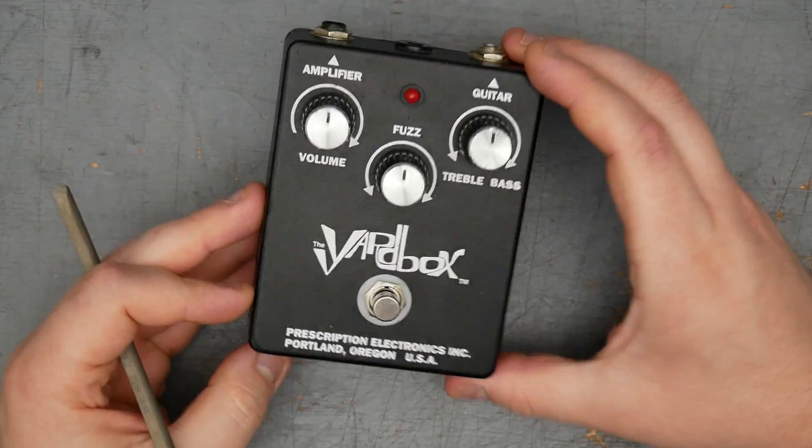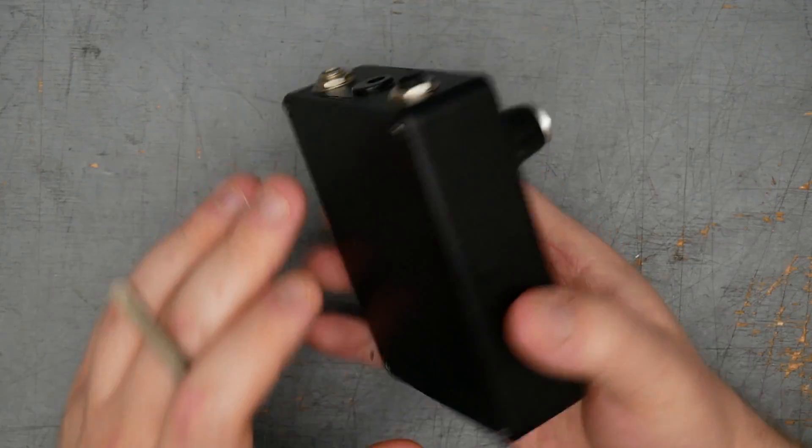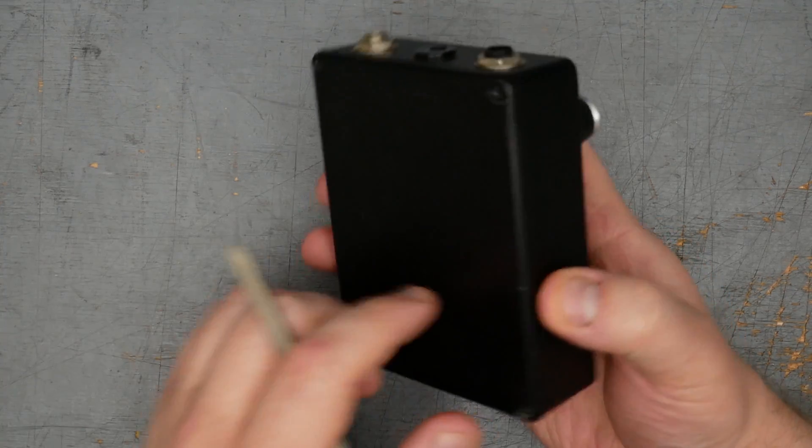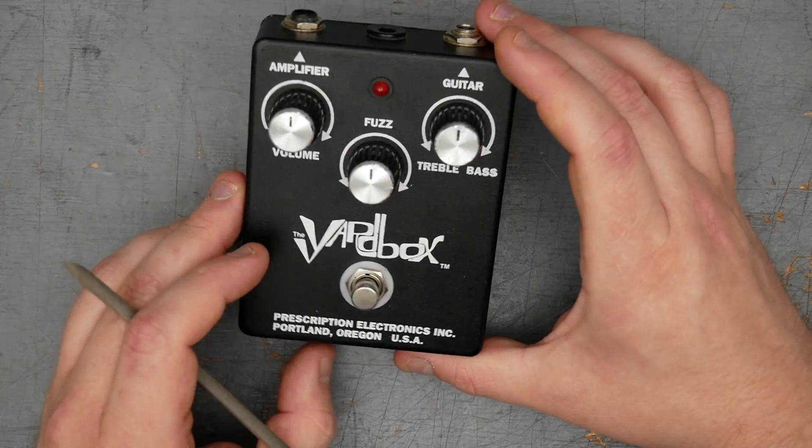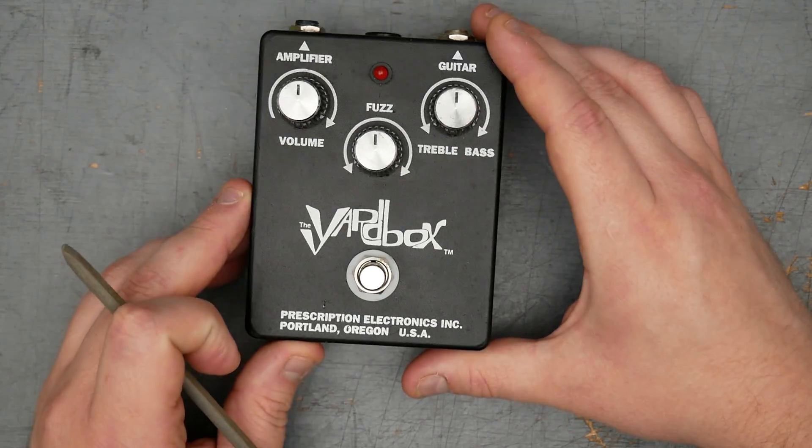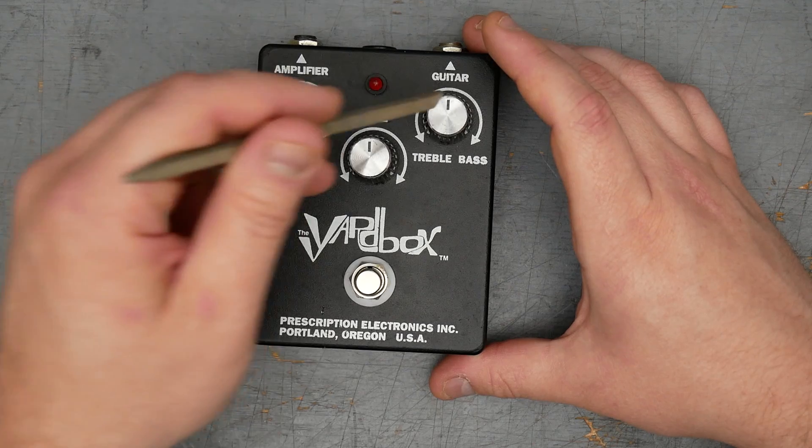So we have the Prescription Electronics Yardbox. As you can see, 1590 BB size enclosure. I don't think there's a powder coat. It doesn't feel quite as thick as you would normally expect for a powder coat. So I think it's some type of paint. And the Yardbox logo appears to be print screened on. For controls, we have volume, fuzz, and treble bass.